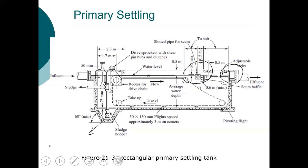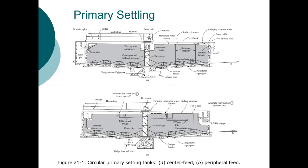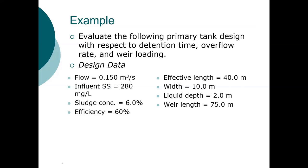With a circular clarifier, the influent is typically in the center and the effluent flows from the sides. You can see the influent pipe, the sludge trough where sludge is drawn off. On Monday, we'll start here and go through this example, then continue with the rest of the slides.